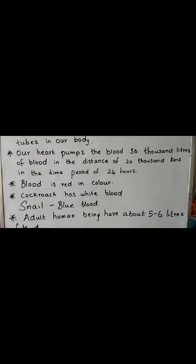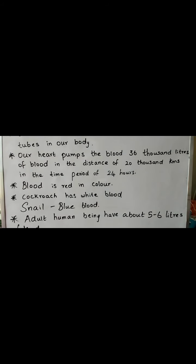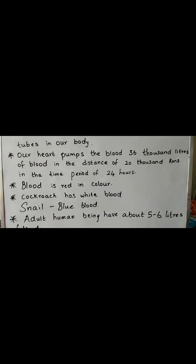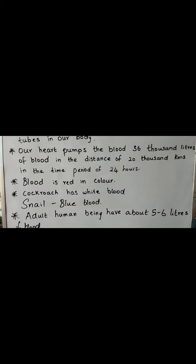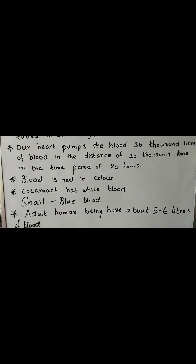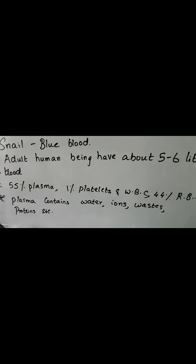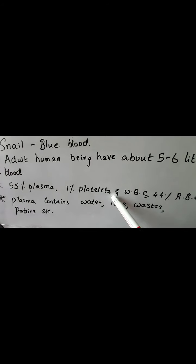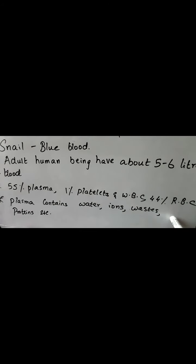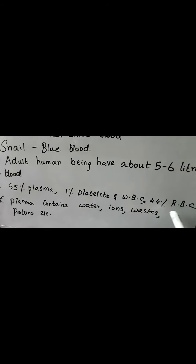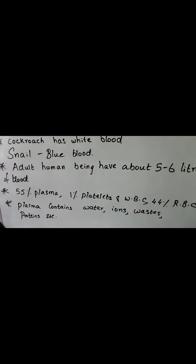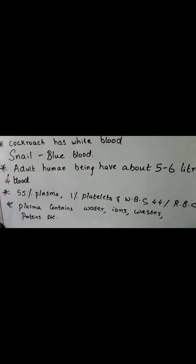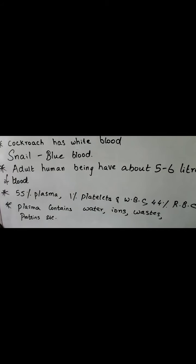Blood is red in color due to the presence of a protein known as hemoglobin. Not all animals have red-colored blood — cockroach has white-colored blood and snail has blue-colored blood. An adult human being has about 5 to 6 liters of blood. Blood consists of 55% plasma, 1% platelets and WBCs, and 44% red blood cells. Plasma is a fluid consisting of water, ions, waste, proteins, glucose, etc.